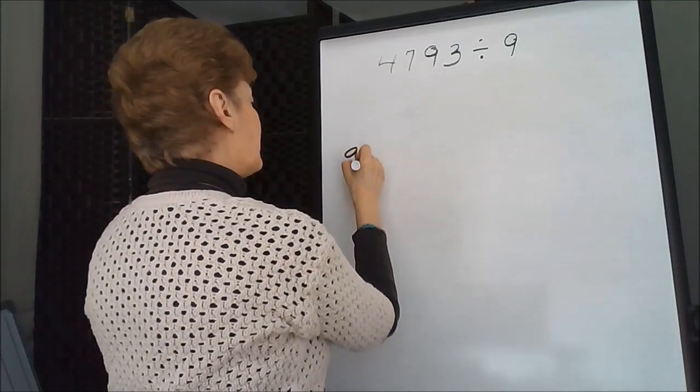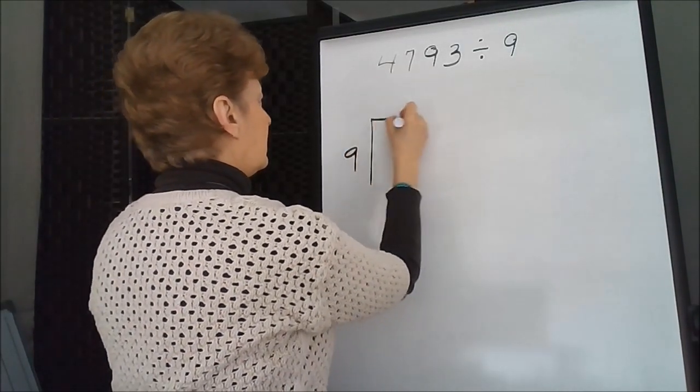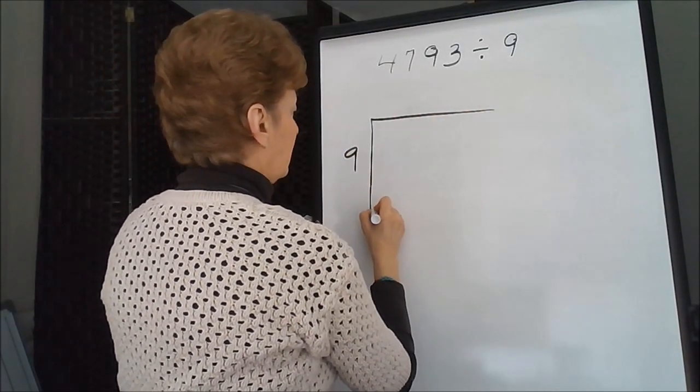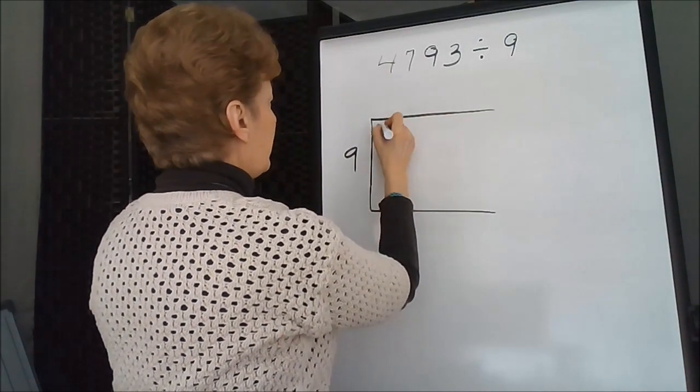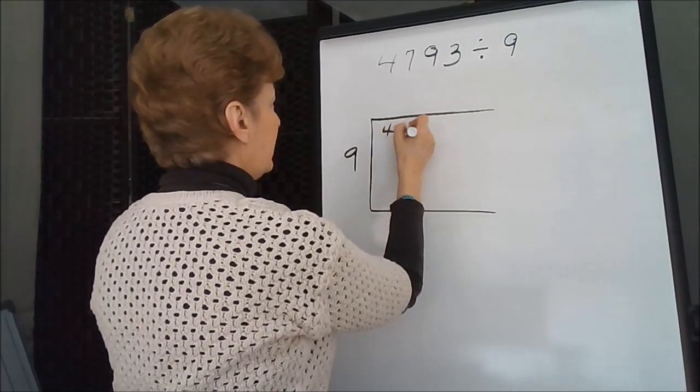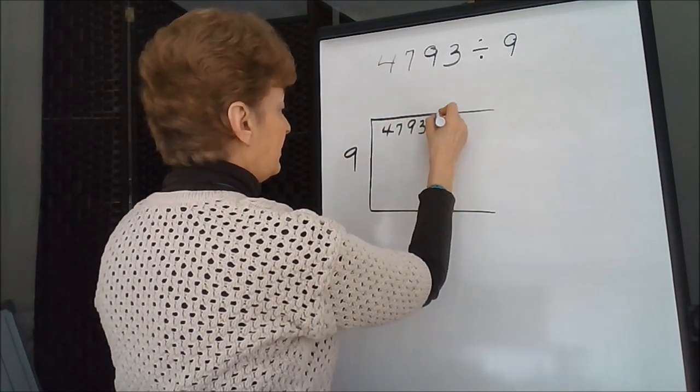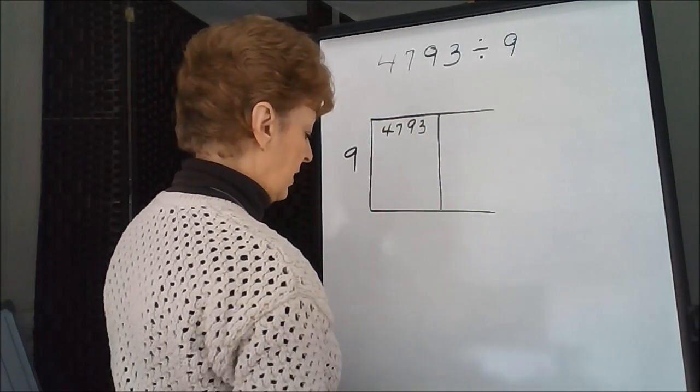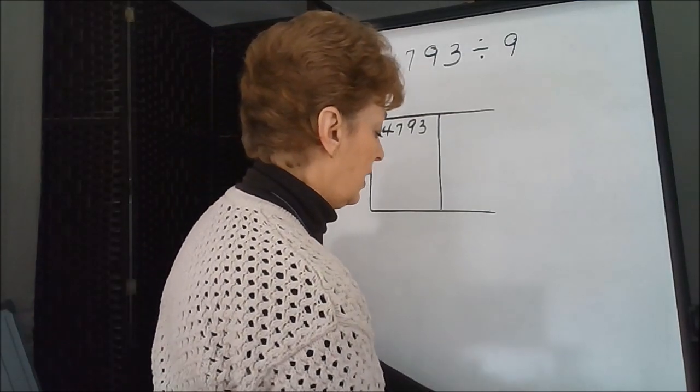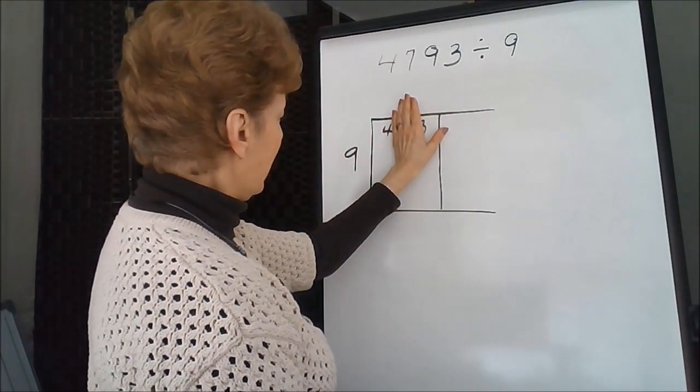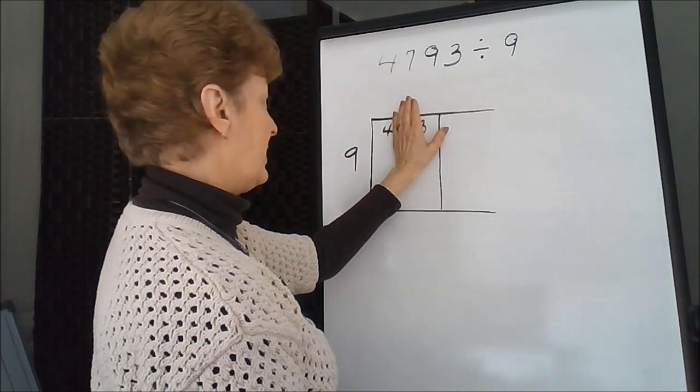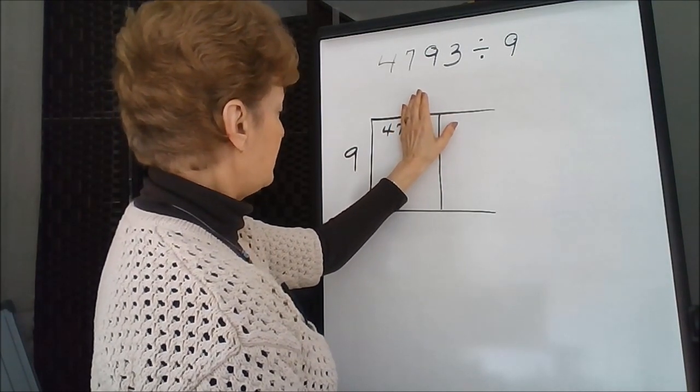The 9 is our divisor. The 4793 is the dividend. So we'll start working with that. 9, how many times does 9 go into 4? Well, it doesn't, so I'm going to move over, too small.